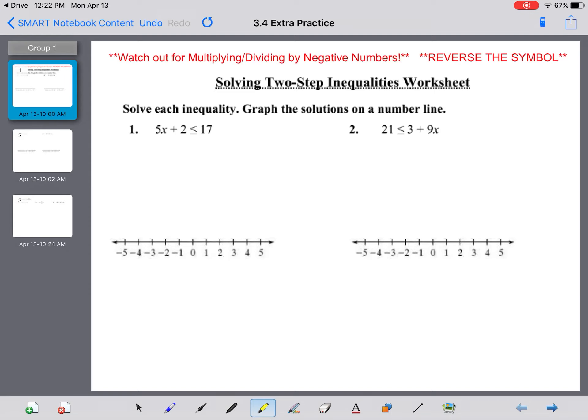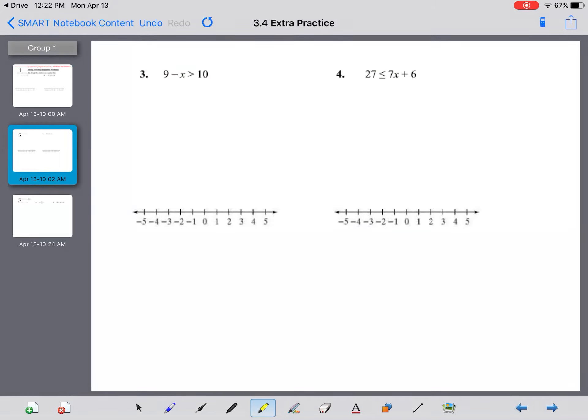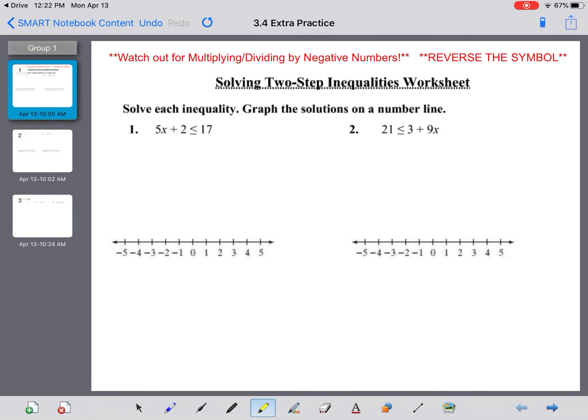Everyone, this is 3.4 Extra Practice: Solving Two-Step Inequalities. I'm going to show you several examples—one, two, three, and four—and then I'll show you the back, the first three examples: seven, eight, and nine. One thing you need to remember is that we need to be watching out for multiplying or dividing by negative numbers. When we do that, we are supposed to reverse the inequality symbol.